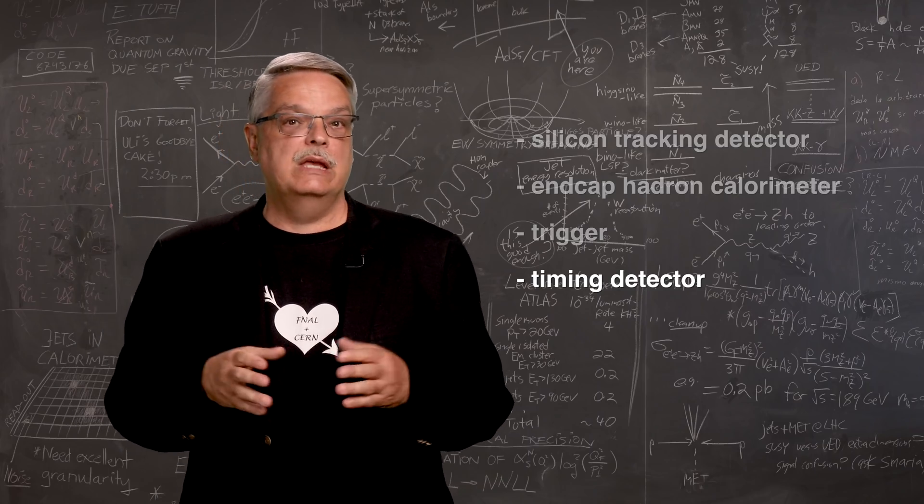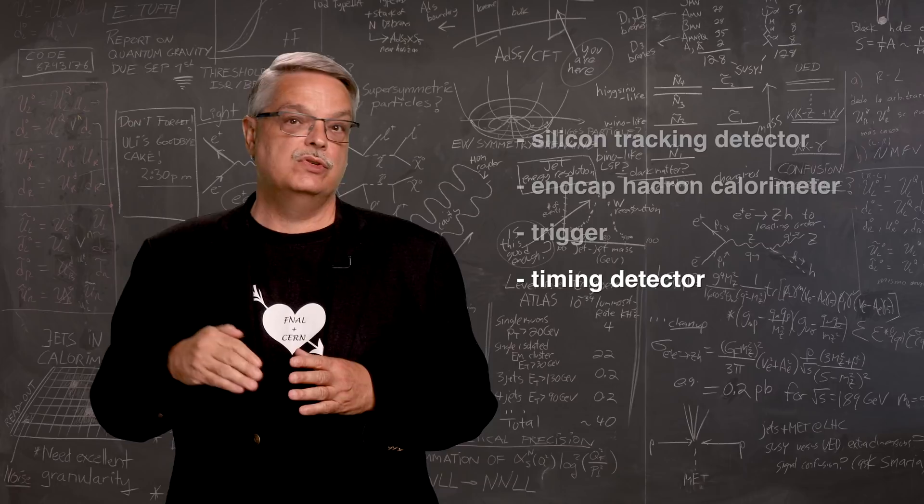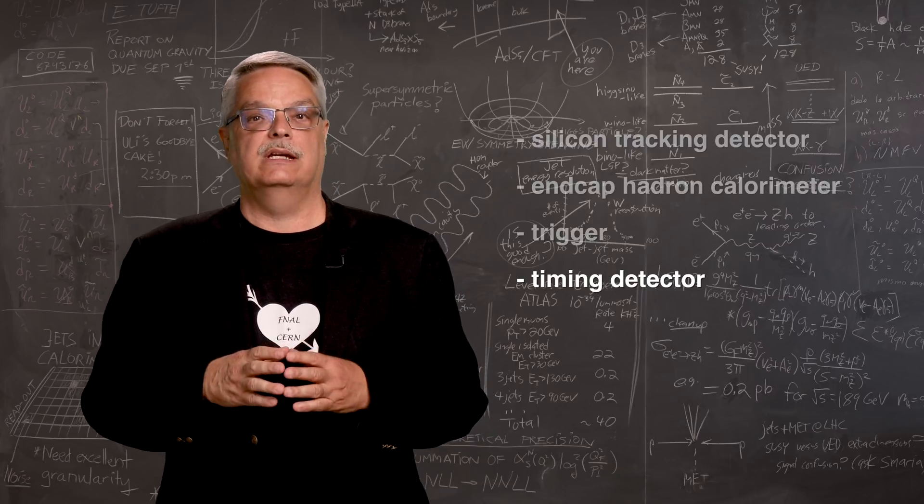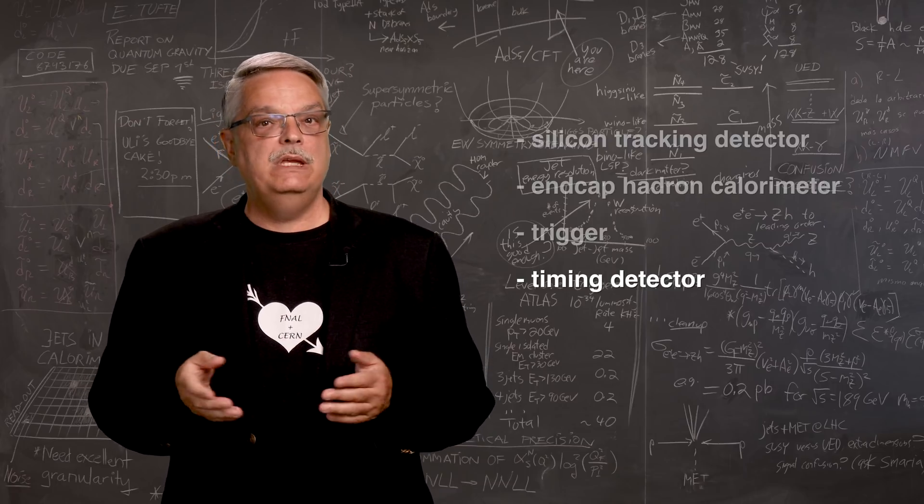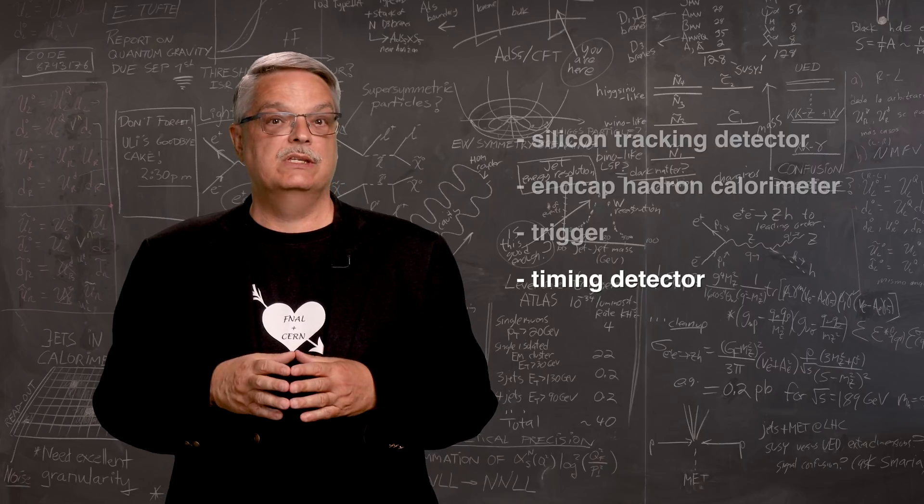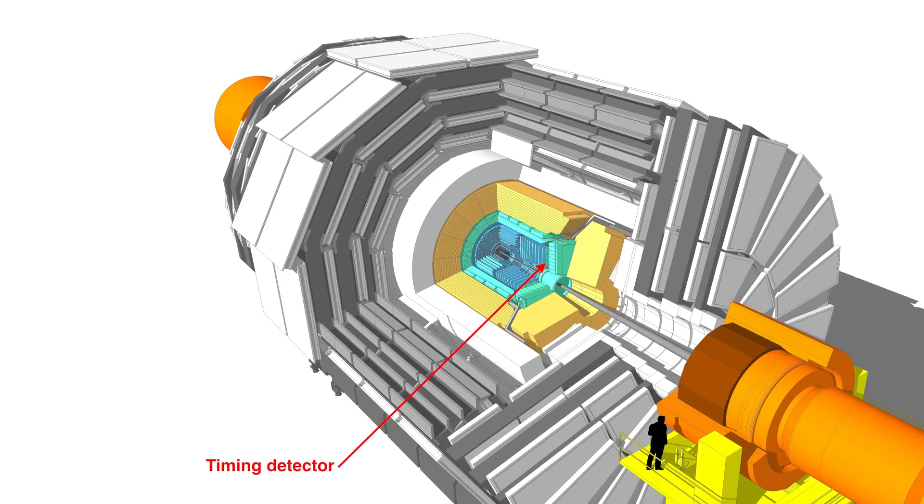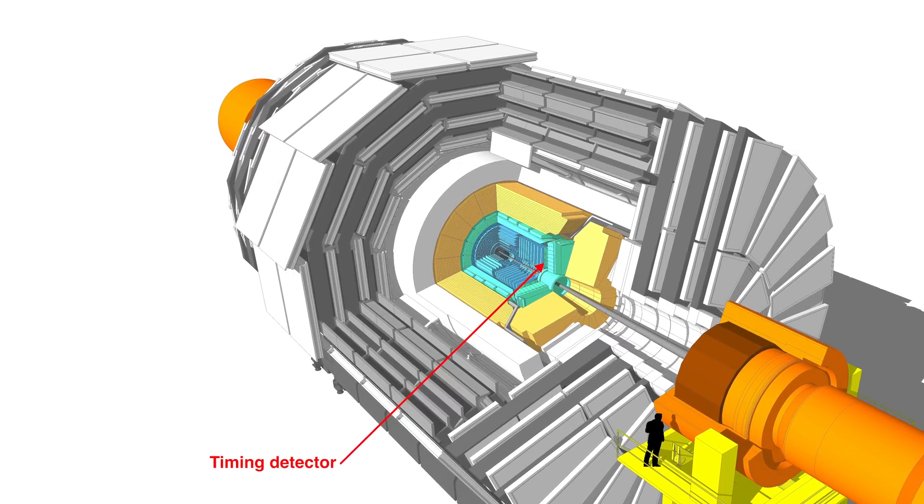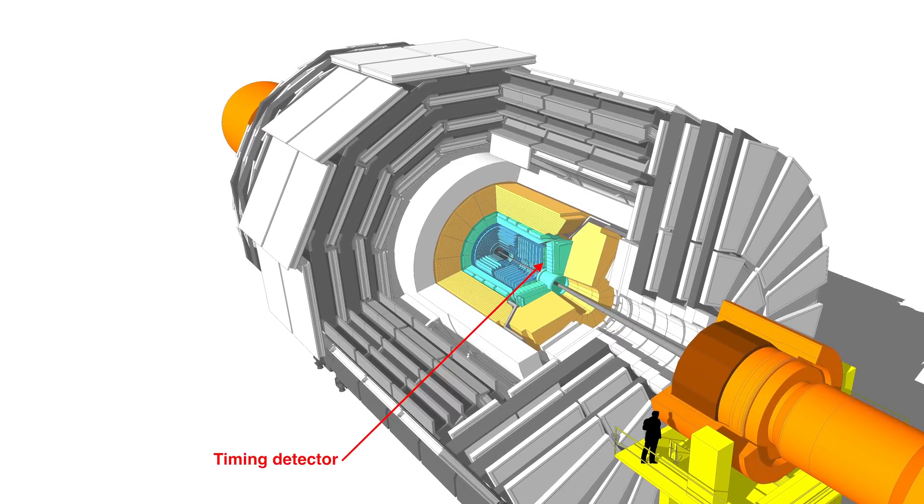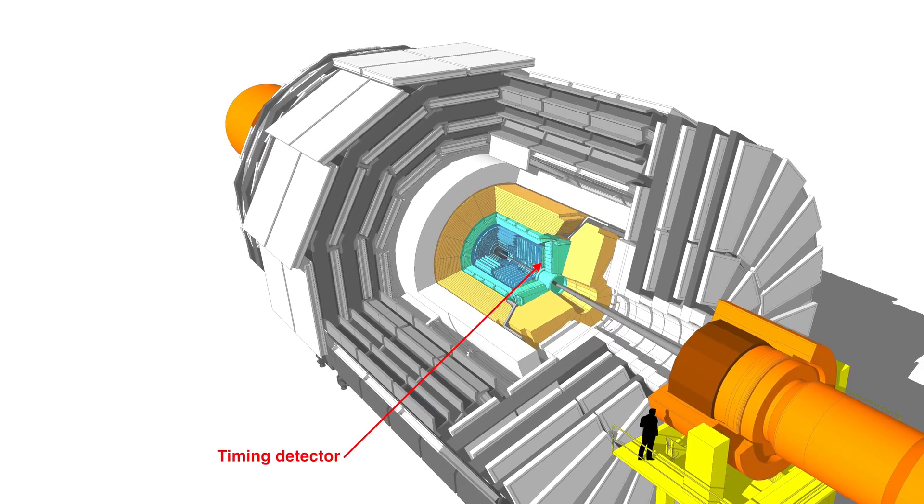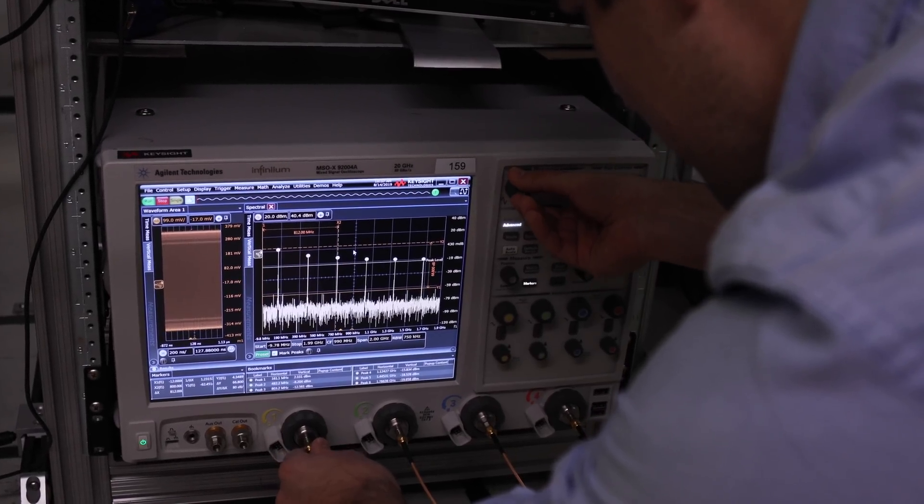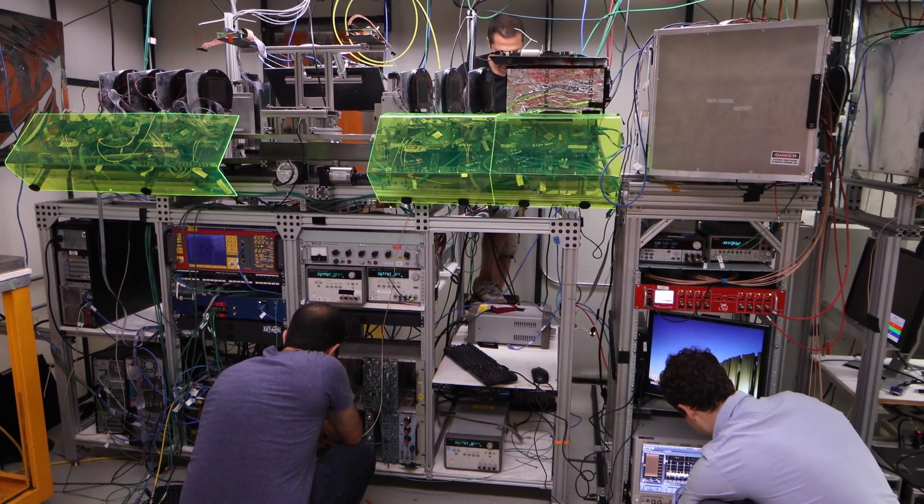The fourth upgrade of the CMS detector on which Fermilab researchers are working is called the timing detector. Every time two beams of protons pass through the CMS detector, more than one collision occurs. In fact, something like one or two hundred collisions simultaneously occur, and all of those tracks are simultaneously passing through the CMS detector. Figuring out which of those tracks came from which collision is pretty hard.